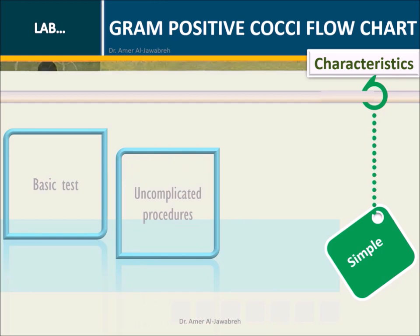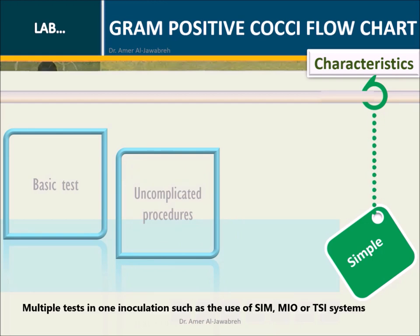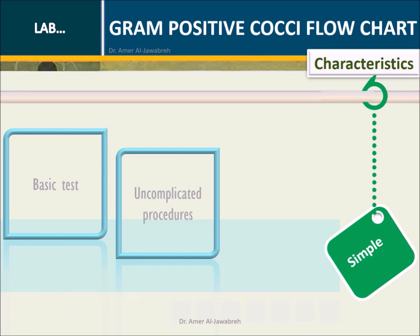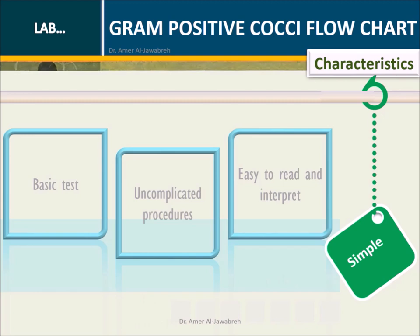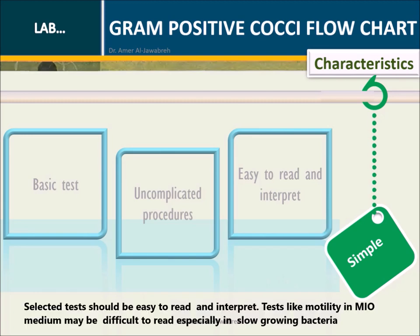Uncomplicated procedures: multiple tests in one inoculation, such as the use of SIM, MIO, or TSI systems. Easy to read and interpret — selected tests should be easy to read and interpret. Tests like motility in MIO medium may be difficult to read, especially in slow-growing bacteria.